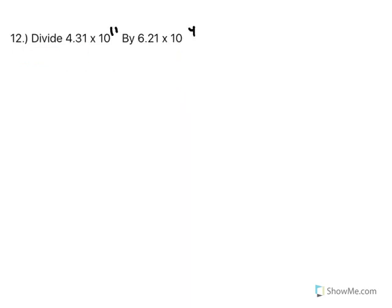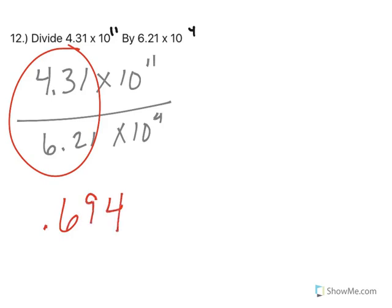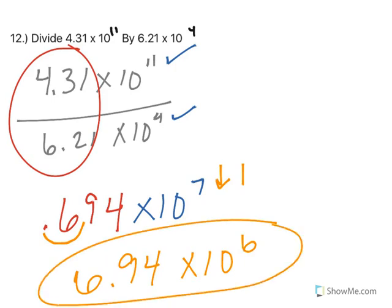Number 12 is going to be similar. I've got 4.31 times 10 to the 11th over 6.21 times 10 to the 4th. I'm a huge fan of writing everything out first because it helps me visualize what I'm doing. I divide these, and I want 3 significant figures because each one has 3. So I have 0.694, 11 minus 4 is 7. 0.6 is less than 1, small number. I'm going to move it one place, and because it's small, that means my exponent's going to go down. So 6.94 times 10 to the 6th. And that, my friends, is playing with scientific notation.